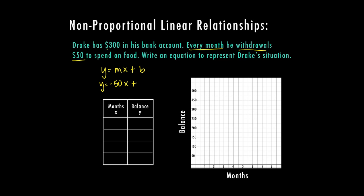And then my add on is going to be where I start from. Since he doesn't start with $0, he starts with $300 in his account. So now I can use this equation. I can plug in at zero months, zero times negative 50 is zero plus 300 means he has $300. So there's my first point at zero, 300.